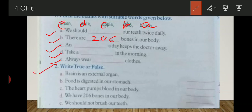Come to the true or false. Brain is an external organ. No, brain is an internal organ. Food is digested in our stomach. Yes. The heart pumps blood in our body. True.